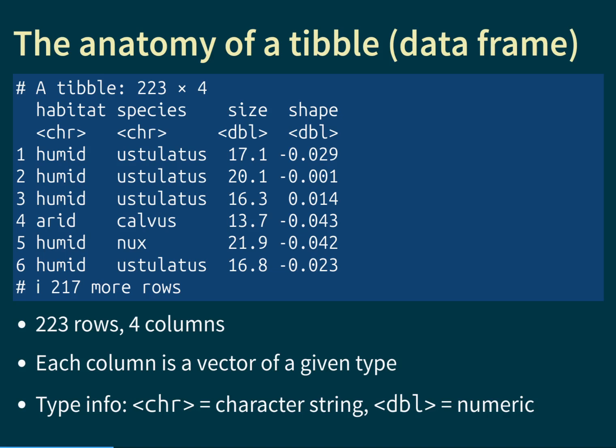Here is the output. At the top there's a comment showing that there are 223 rows and four columns in this data. The best way to conceive of a tibble like this is that each column is itself a vector — and that is a very accurate way to think about it, because each entry in a column has to have the same type. So really, the entries in each column form a vector.